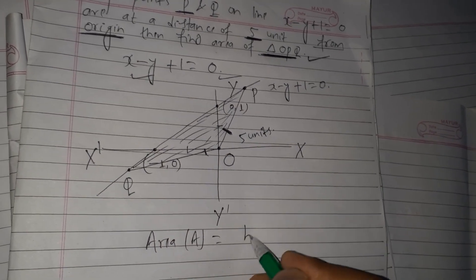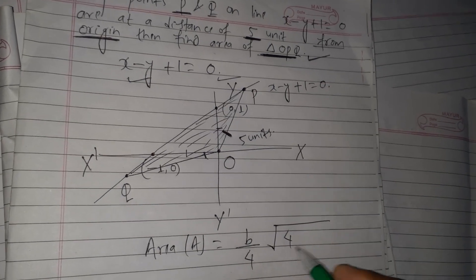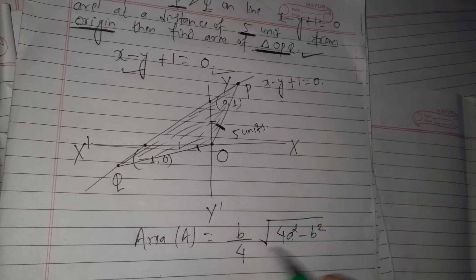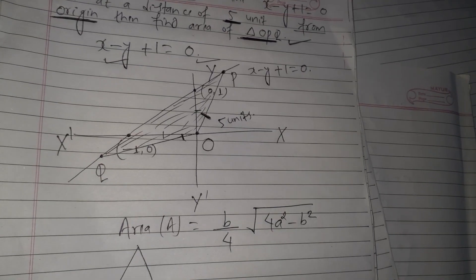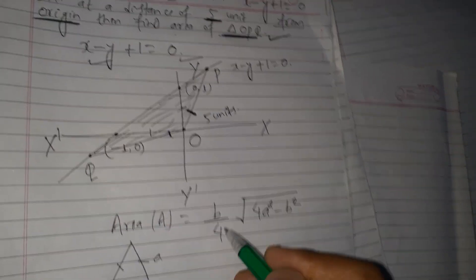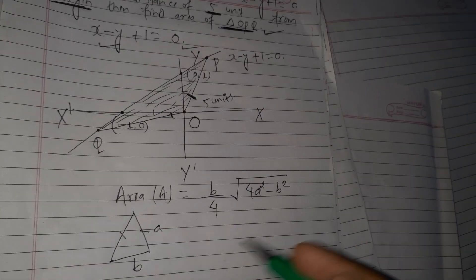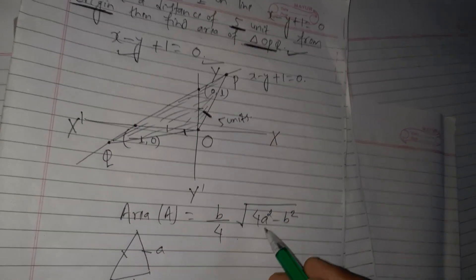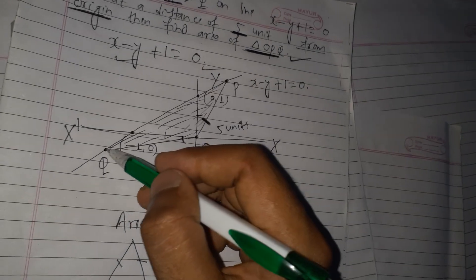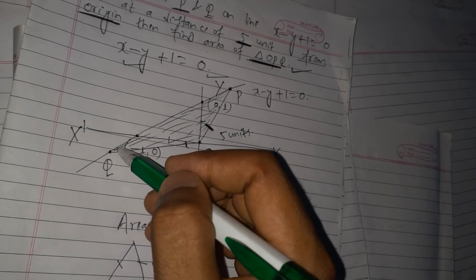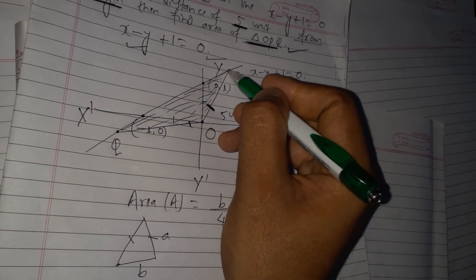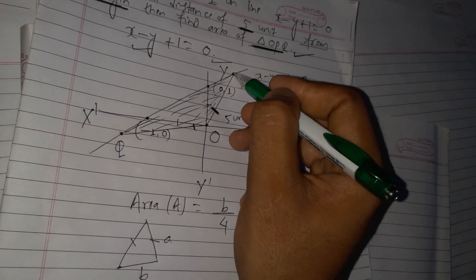For an isosceles triangle where two equal sides are of length a and the base is b, the area formula is: Area equals b over 4 into square root of 4a squared minus b squared. For triangle OPQ, the two equal sides a are 5 units. The base b, which is PQ, is unknown, so we first need to calculate the length of PQ.